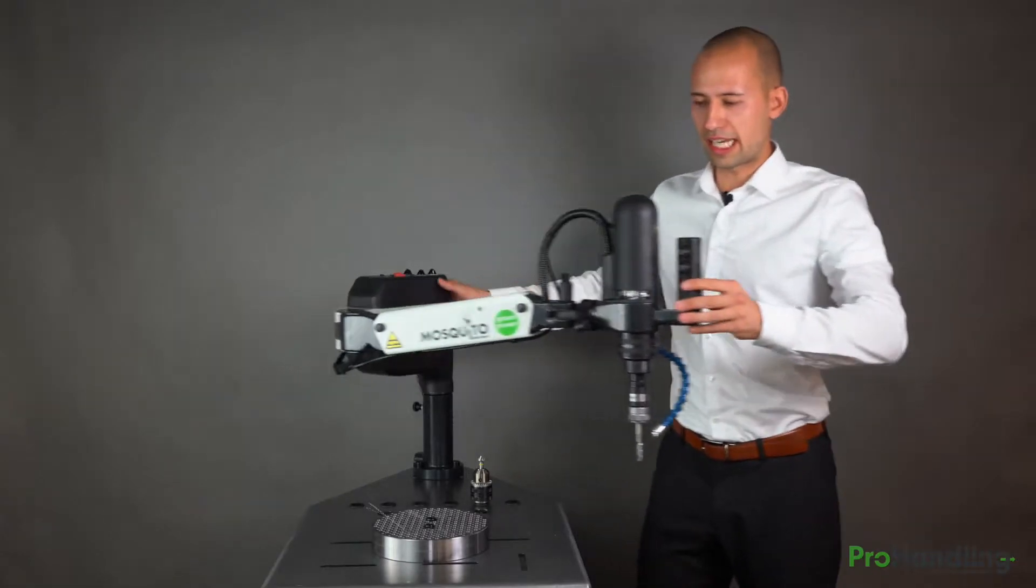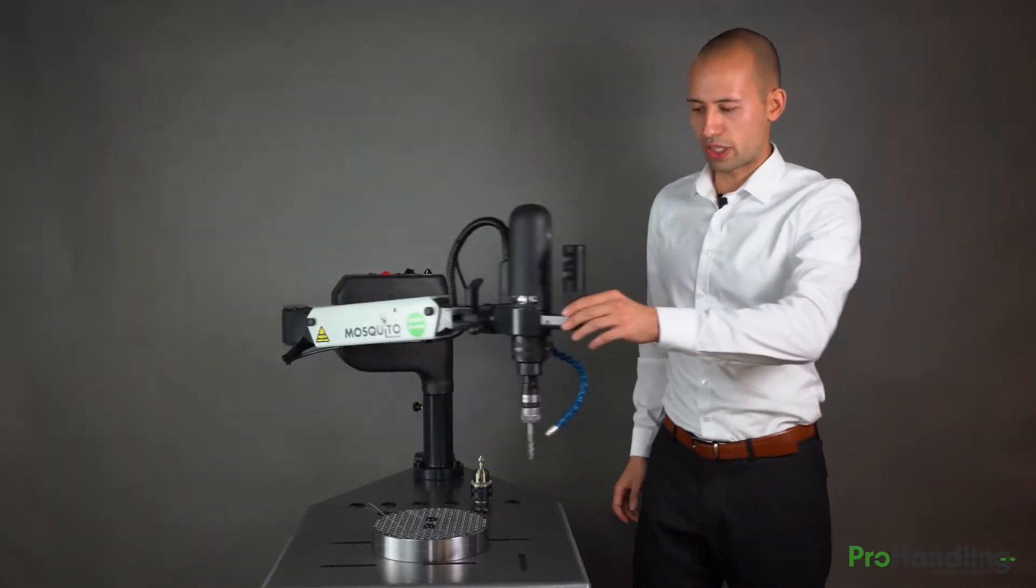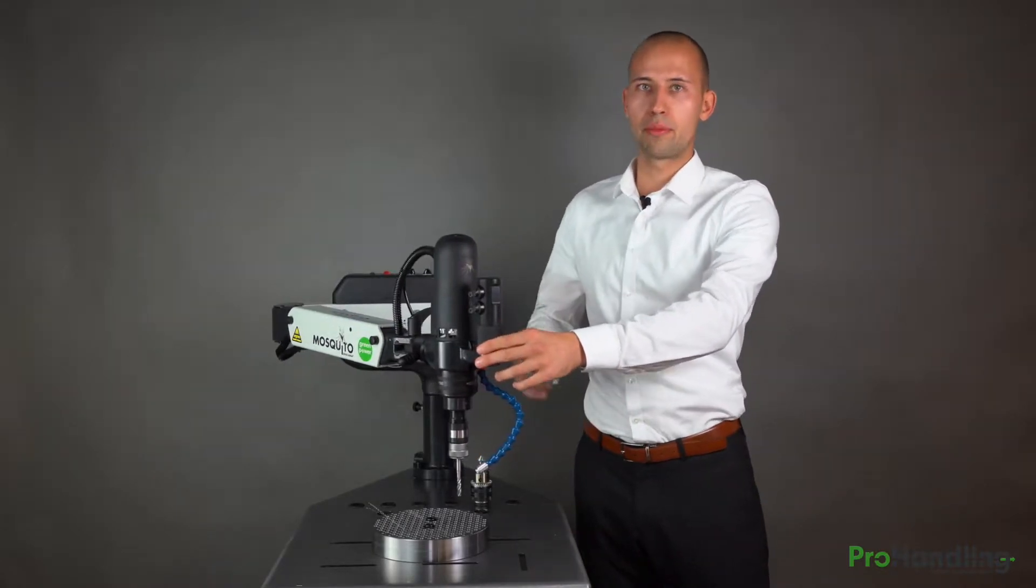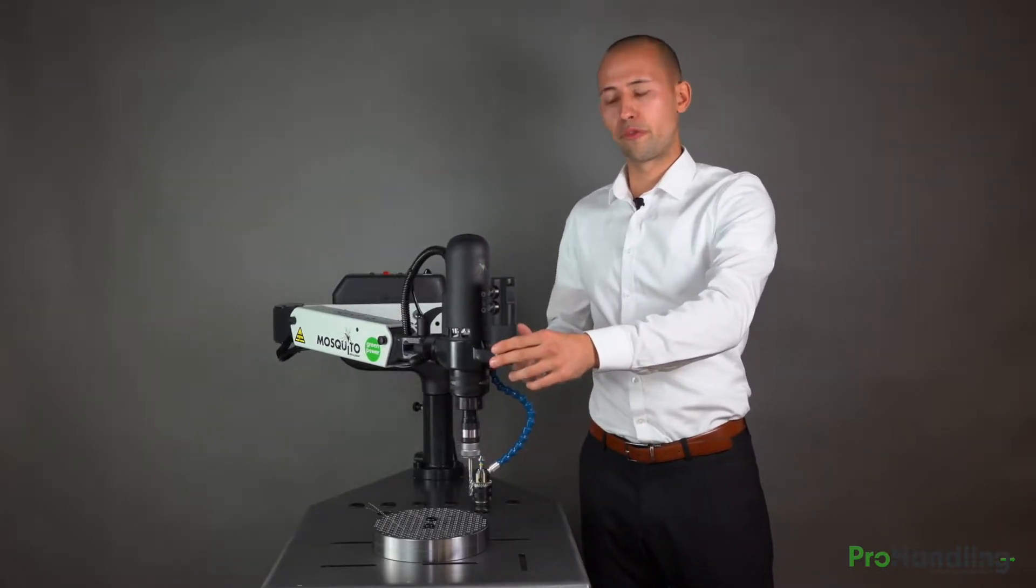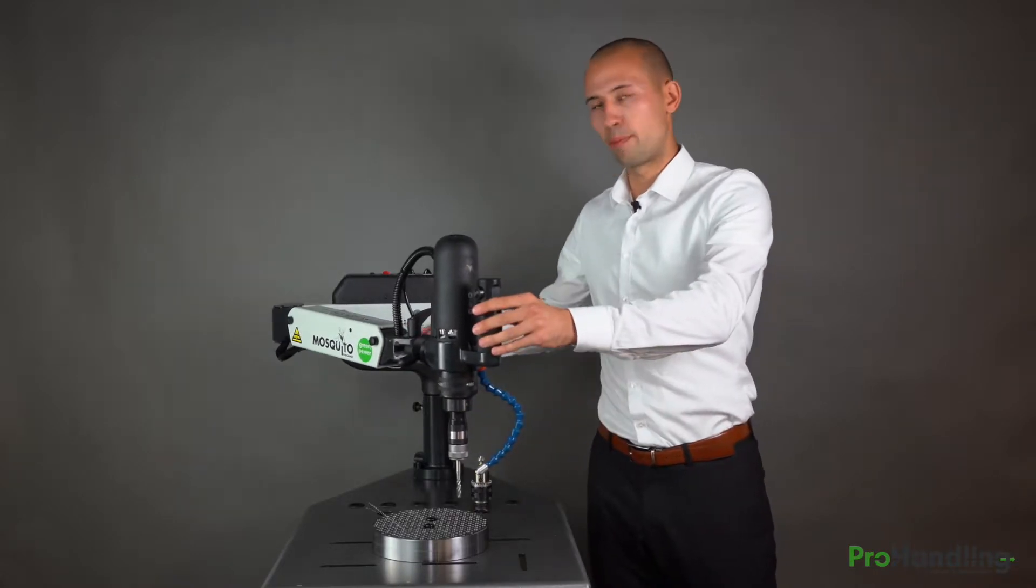The first point is the handling. You can move the machine so easily and find your exact position. This is important if you want to tap like M2, M3 or M4 because your tools are so thin and you need a well-balanced arm.